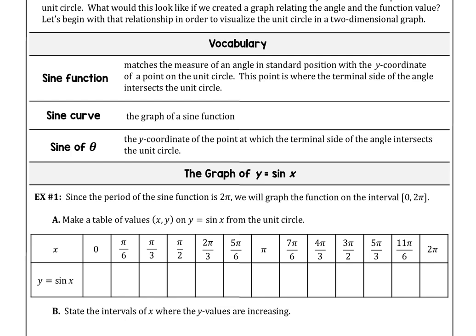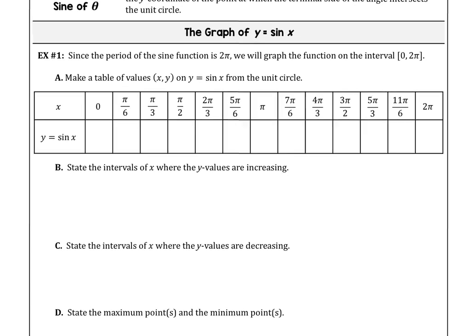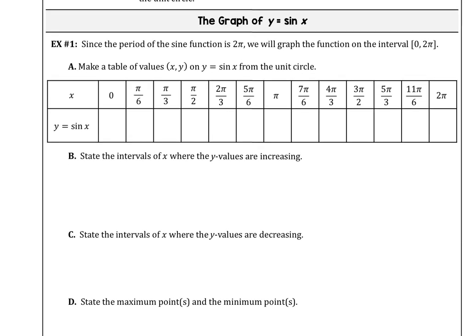At pi over 2, the function maxes out at 1, and at 3 pi over 2 it minimizes at negative 1. So the range of the sine function goes from negative 1 to 1. We'll create what's called a sine curve — that's what represents the graph of our sine function. To recap: sine of theta on the unit circle is the y coordinate on all those points we've memorized. The period of the sine function is 2 pi, and we're going to graph the function from 0 to 2 pi.